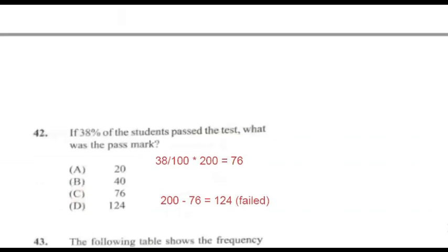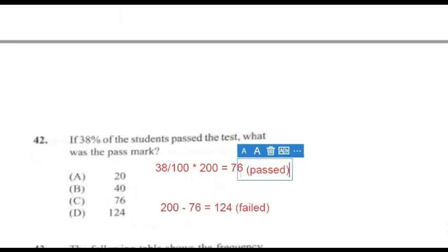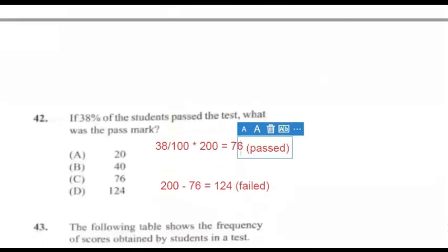Question 42: If 38% of the students passed the test, what was the pass mark? 38% of 200 is 76, which means 76 students passed. So 200 minus 76 gives us 124 students who failed. Looking at 124 on the graph and going across, this corresponds with the 40% pass mark, meaning the mark required to pass the exam was 40%. Answer for 42 is B.